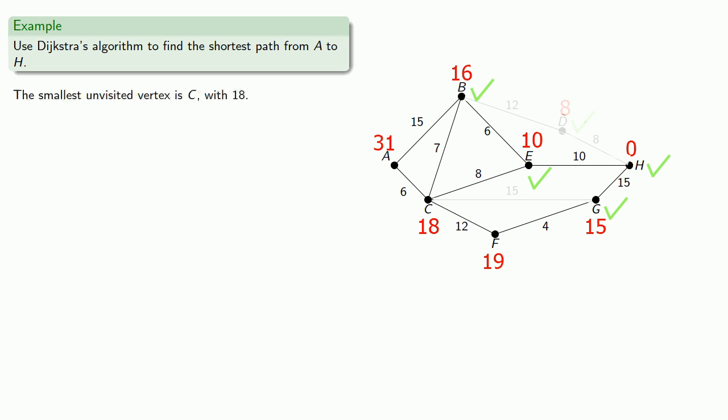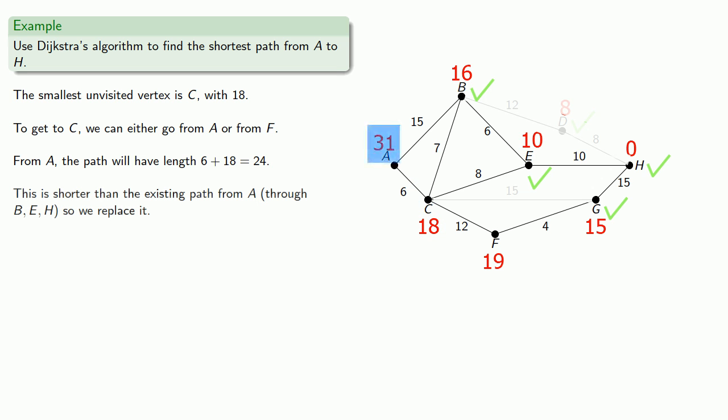We continue. The smallest unvisited vertex is C with 18. In other words, if you can get to C, you can get to H with just 18 more units. Now to get to C, we can either go from A or from F. From A, the path length will be 6 plus 18 or 24. This is shorter than the existing path from A through B, E, and H, and so we replace it.